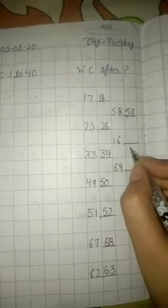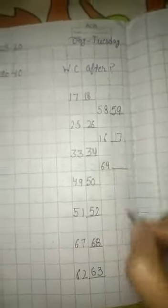Next is 1, 6, 16. After 16 comes 1, 7, 17.